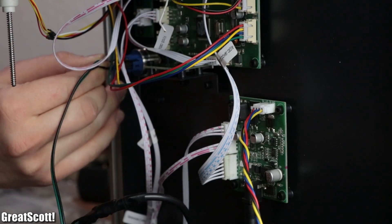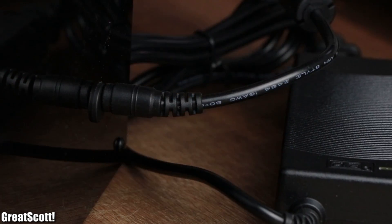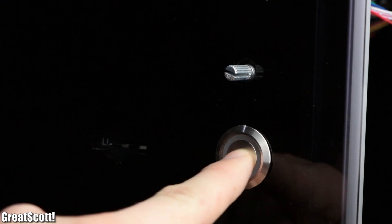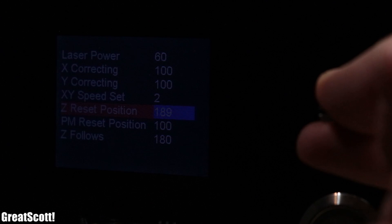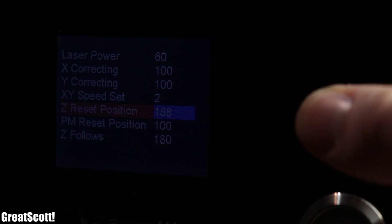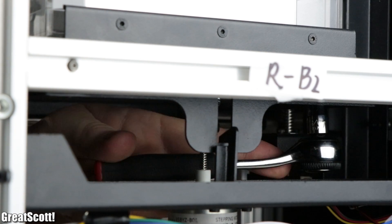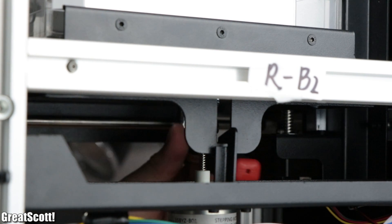I plugged in the power brick, inserted the vats and build platform, and finally turned on the machine. After changing the Z reset position of the printer, the build platform lowered onto the vats, and it was time to level it by adjusting the four nuts underneath it.